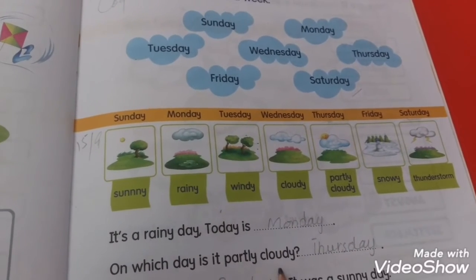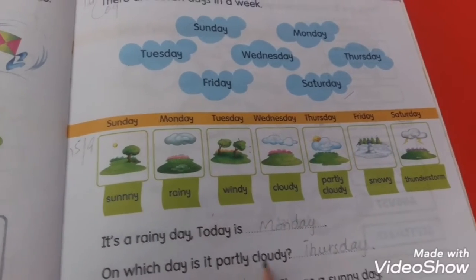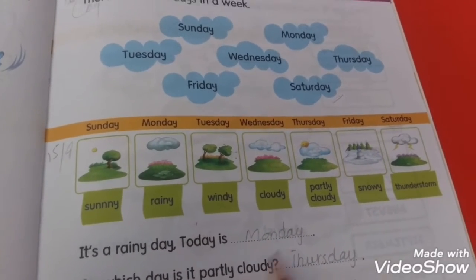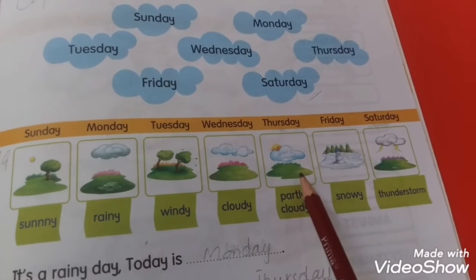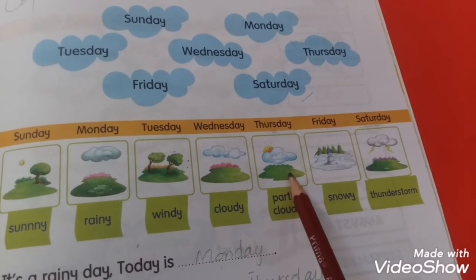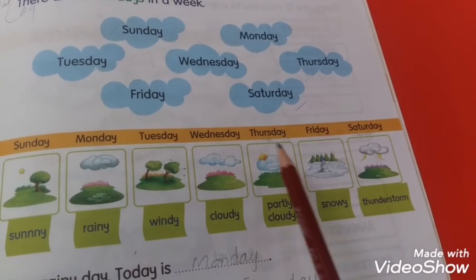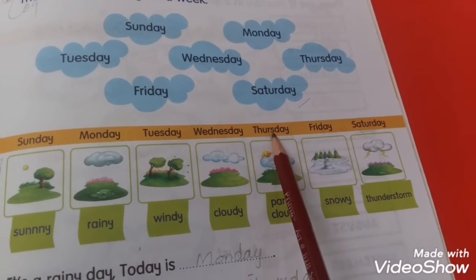On which day is it partly cloudy? Partly cloudy — this is the symbol. Partly cloudy — Thursday, Wednesday.